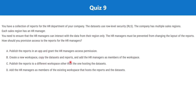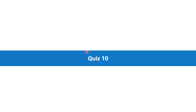The correct answer is option A — publish the reports in an app and grant HR managers access permission. The critical requirement is that HR managers must be prevented from changing the layout of the report. Making them members of a workspace — whether existing or new — would give them inherited permissions to change the report layout. Publishing an app and granting access permission fulfills both requirements, so option A is correct.